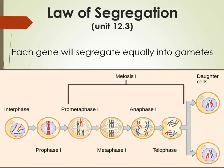Mendel came up with two very important laws about genetics that we have only further supported and still support today. The first one is the law of segregation. What this means is that each allele of each gene will segregate into two different gametes. So if we look here at a cell going through meiosis to become gametes, we have two long chromosomes — the red and the blue — those are homologous, and then two short chromosomes that are also homologous.